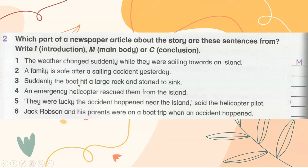Which part of a newspaper article about the story are these sentences from? Write I for introduction, M for main body, or C for conclusion. 'The weather changed suddenly while they were sailing towards an island' — M, main body. 'A family is safe after a sailing accident yesterday' — I. 'Suddenly the boat hit a large rock and started to sink' — M.